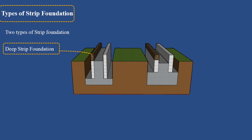Based on their characteristics, there are two types of strip foundation. The first is deep strip foundation, which is the most common and cheapest type, provided soil conditions are suitable. A reinforced concrete strip supports the walls. The trench can be of any depth but should be at least 40 inches (1.1 meters) deep and 24 inches (0.6 meters) broad. Concrete should have a minimum depth of 9 inches (0.23 meters).